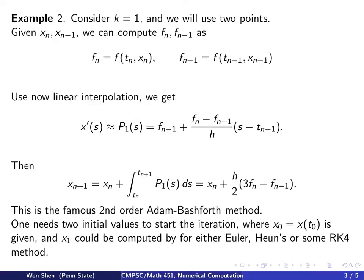Taking a closer look at this algorithm, we realize that in order to initiate this iteration — to compute the value at n+1 — you need the value at n and the value at n-1. So you will need two initial starting values: x0 and x1. Then you can start computing x2, x3, and so on. But only x0 is given, so we need to find a way of getting x1. You could use some other explicit method like Heun's or Runge-Kutta. Once you have it, you can use the Adams-Bashforth and do the iteration.